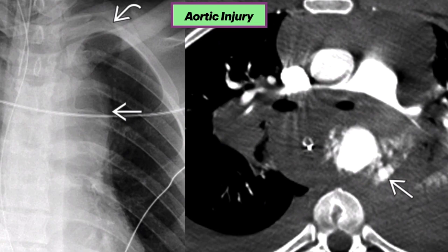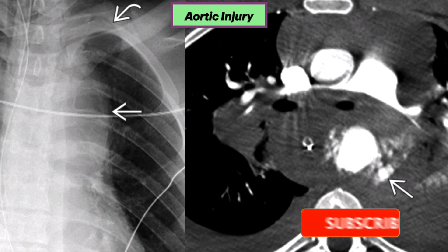The next case is an aortic injury. Chest x-ray on the left shows a left apical cap. There's also rightward tracheal deviation. The paratracheal stripes are thick, and there's loss of the aortic arch and the aortopulmonary window. The axial CT angiogram on the right of the same patient shows active contrast extravasation from the ruptured descending aorta with a large mediastinal hematoma producing mass effect on mediastinal structures. Note the large left hemothorax, which causes the apical cap.